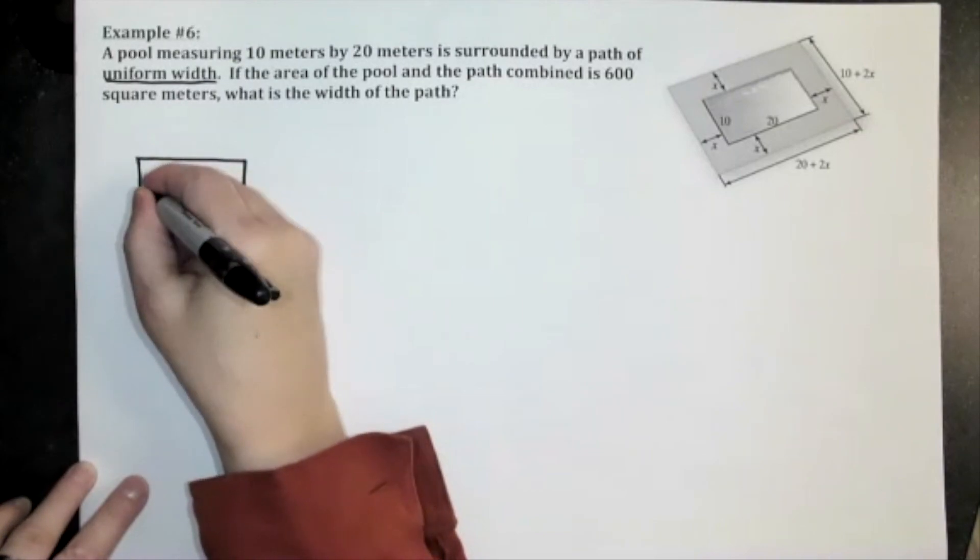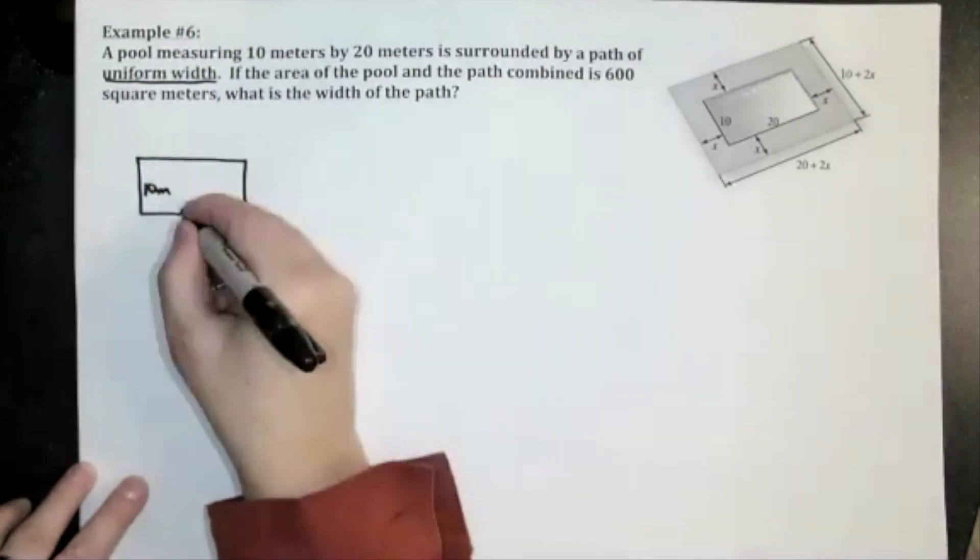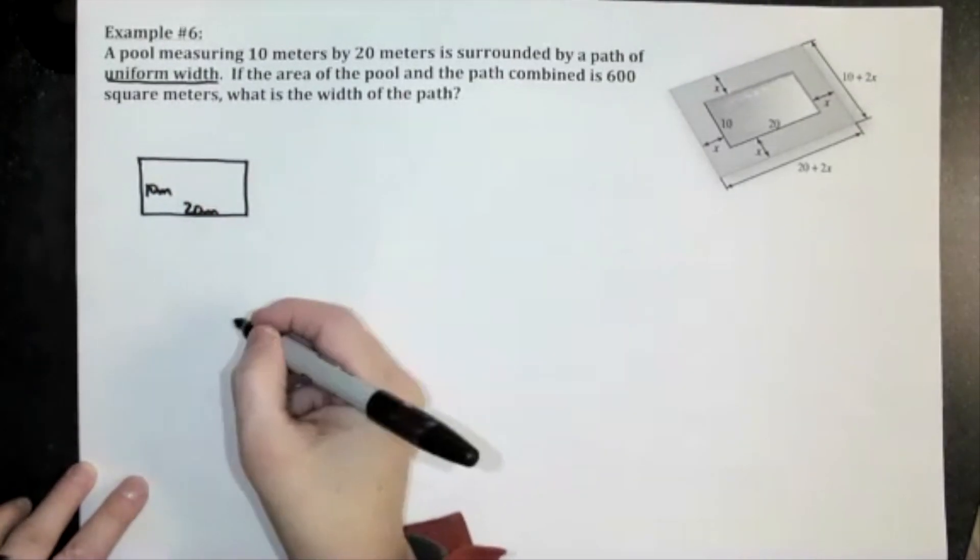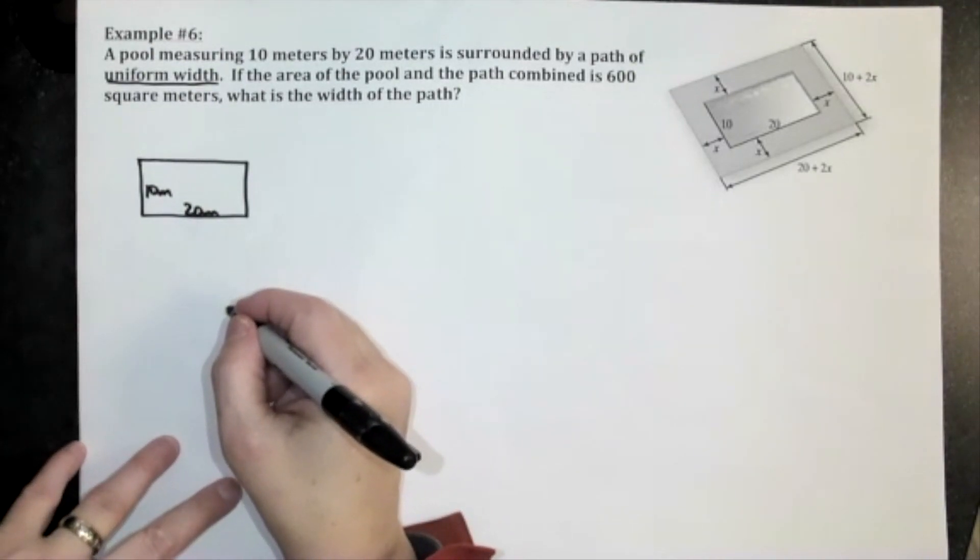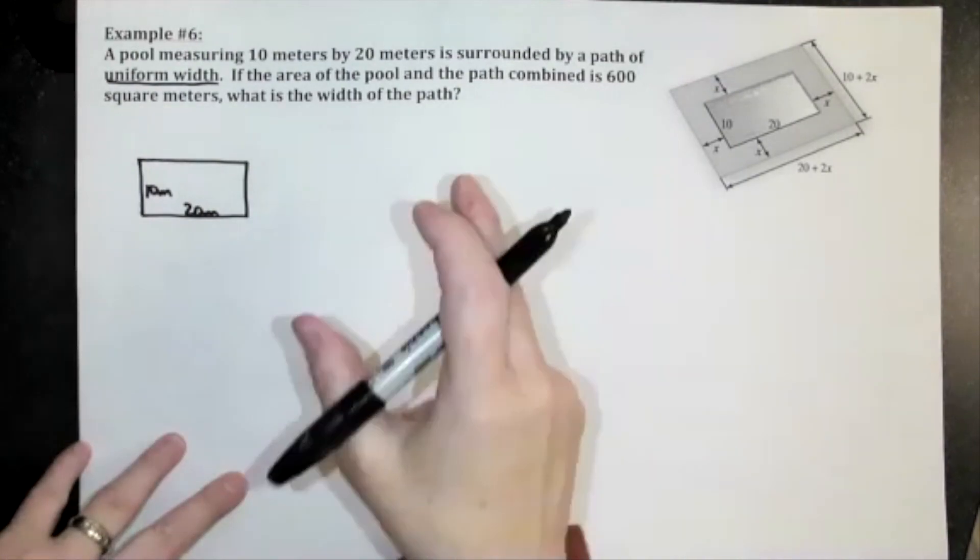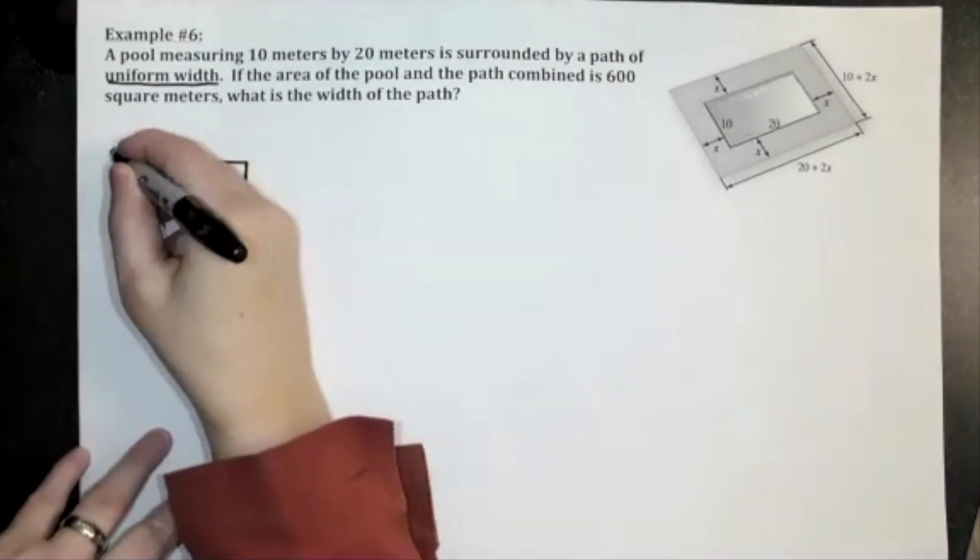A 10 by 20 meter pool. There's 10 by 20, and it's surrounded by a path of uniform width, which means surrounded means it's around all of it.